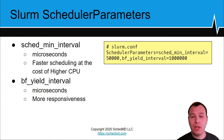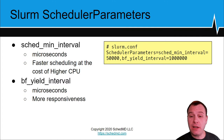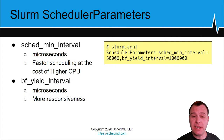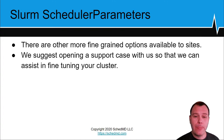Other notable scheduler parameters: sched_min_interval defines how frequently in microseconds the main schedule loop will execute and test pending jobs — a setting of 50,000 would be desirable in a high-throughput environment. bf_yield_interval tells the scheduler how often to relinquish locks during backfill so other pending operations like handling client commands can take place. There are many more options available; if you have further questions please open a support request.